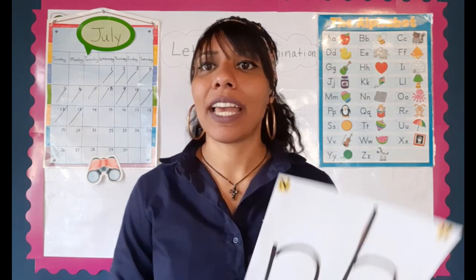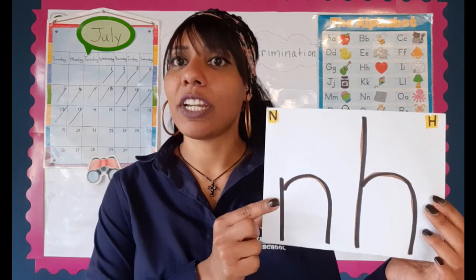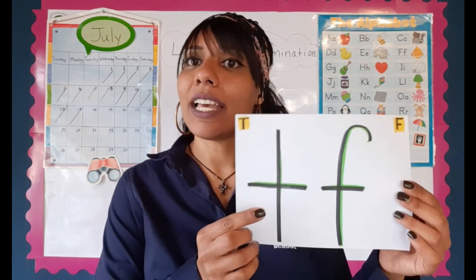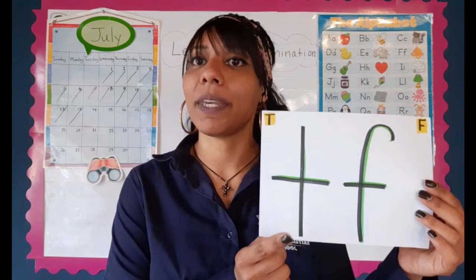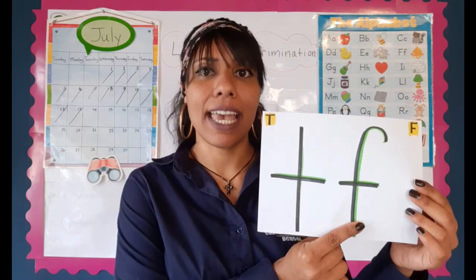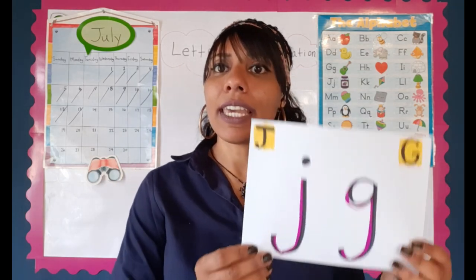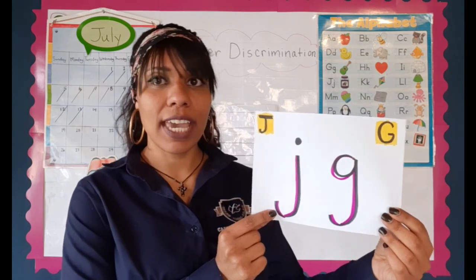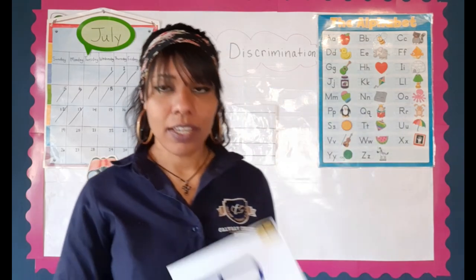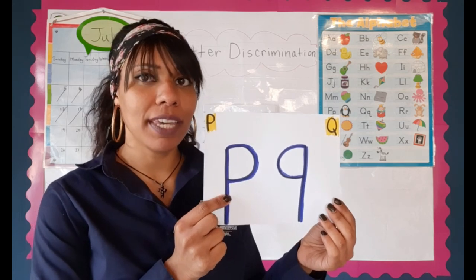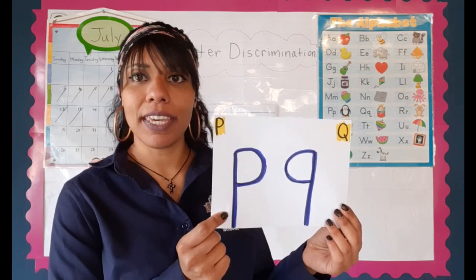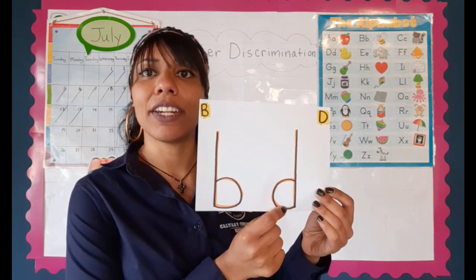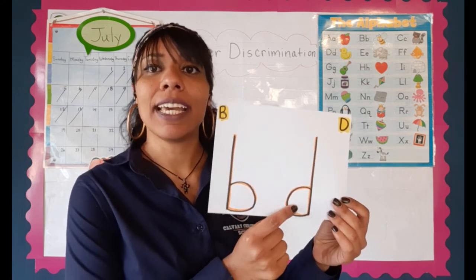Example number one is the letter N and the letter H. The next example is the letter T and the letter F. The next example is the letter J and the letter G. The next example is the letter P and the letter Q. And the last example is the letter B and the letter D.